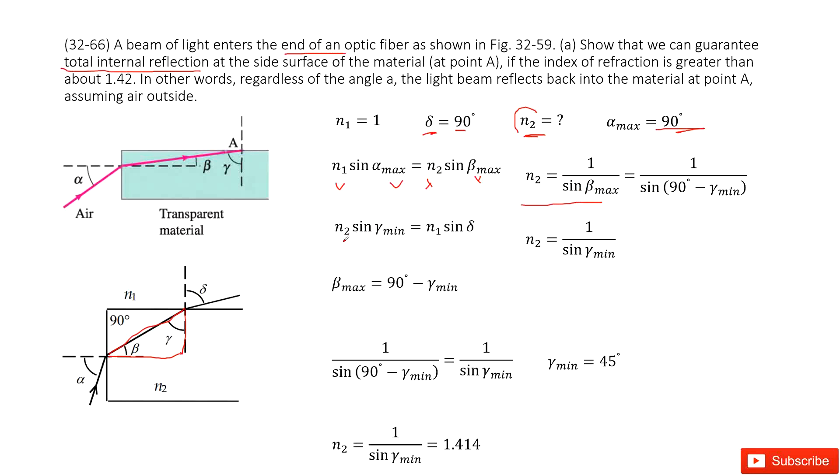And also in this equation, we can see n2 we don't know, sin(gamma_min) we don't know. n1 is given as 1, sin phi is 1. So this term becomes 1. So we have n2 equals 1 over sin(gamma_min), right? So we write it there.